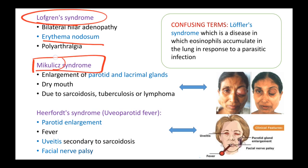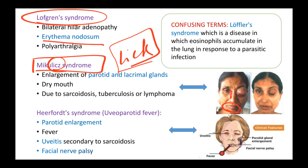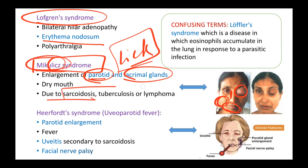The next syndrome is Mikulicz syndrome. Think of licking something - when you lick an ice cream or chocolate, your tongue is involved and your eyes are enjoying too. In Mikulicz syndrome, the parotid and lacrimal glands are affected - similar to Sjögren's syndrome. The parotid glands are enlarged and the lacrimal gland is also enlarged. This can be caused by sarcoidosis, tuberculosis, or lymphoma.